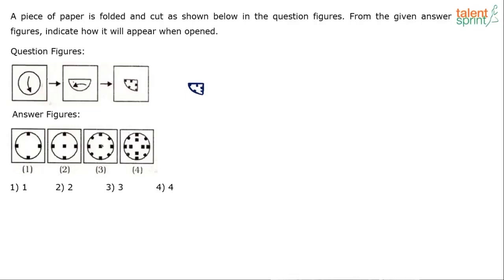If you see in option number two and option number three, we have something coming up in the center. How can it come up in the center when here no marking was made, no cut was made? So two and three are eliminated straight.